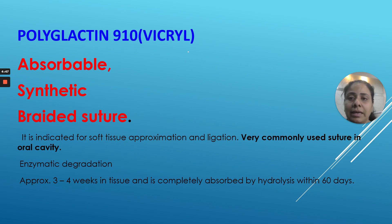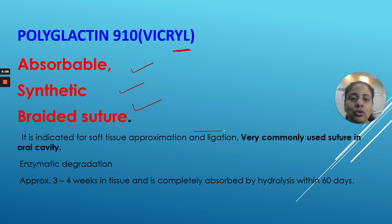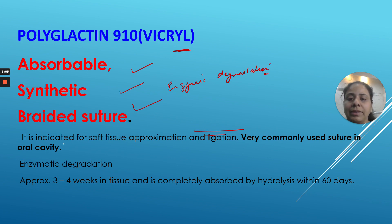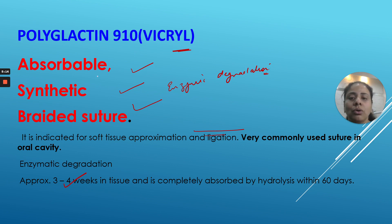Polyglactin 910, known by the brand name Vicryl, is the most commonly used suture in the oral cavity. It is absorbable, synthetic, and braided. It undergoes enzymatic degradation — within 3 to 4 weeks of placement the suture gets weakened, and within 60 days it gets fully resorbed.